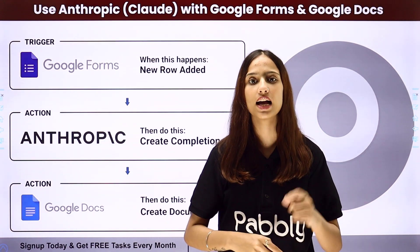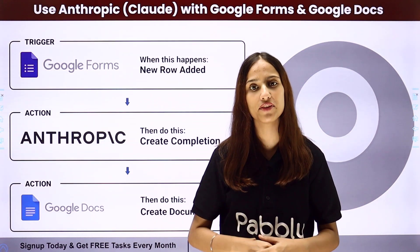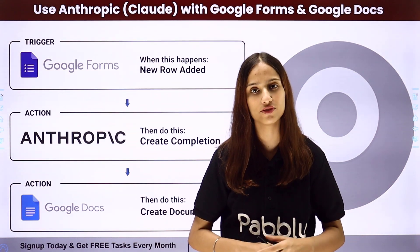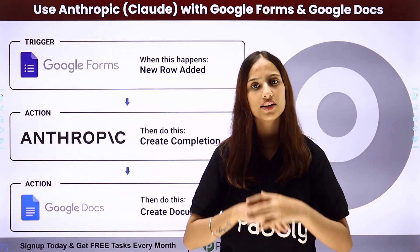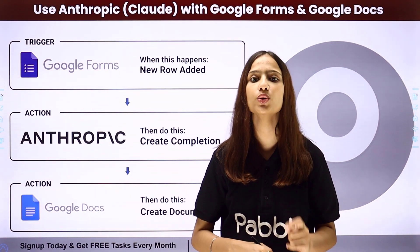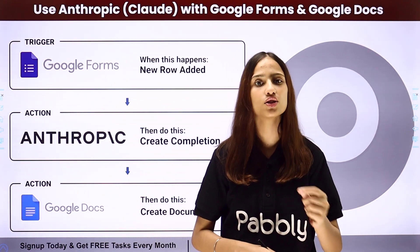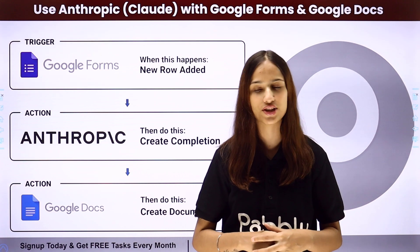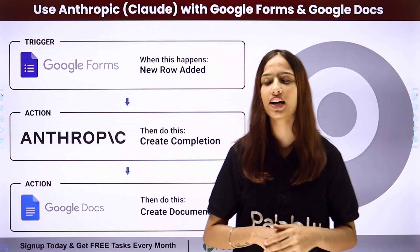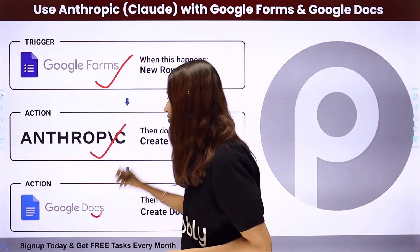Here, let's say that I'm using a form builder application, Google Forms. My objective is that whenever a new form submission is done, I want to use the details from that contact form to create an automated article using Anthropic. Once the article is generated, I want to create a document in Google Docs using that same automated article.